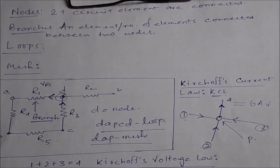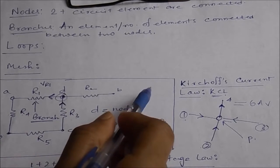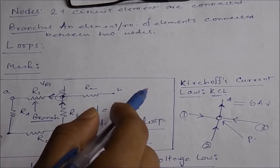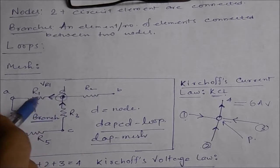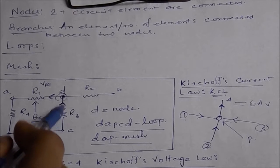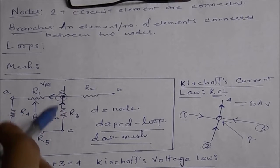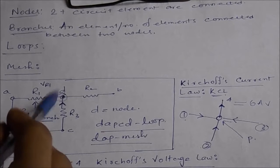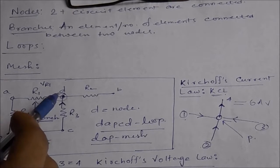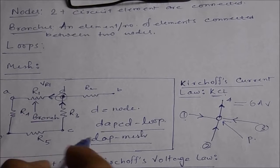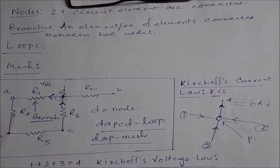Then we have a loop. A loop is when we start from a point and return back to that same point. For example, starting from D, current passing through R4, then R5, then R3 and going back to D — the path D-A-P-C-D is a loop. A mesh is the smallest binary part of a loop that cannot be disintegrated further — for example, D-A-P is a mesh.